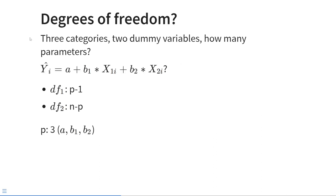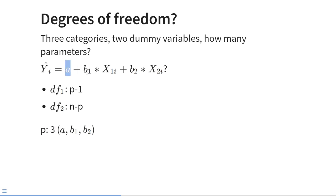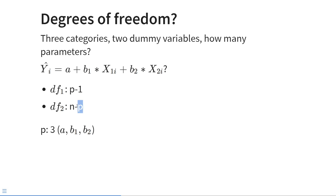How many degrees of freedom does such a regression model have? When performing an F-test for overall model fit, we have two sources of degrees of freedom. The degrees of freedom for the regression model equals the number of parameters minus 1. Here we have three parameters — the intercept a, slope b₁, and slope b₂ — so that's 3 minus 1 equals 2. The degrees of freedom for the residuals equals the number of participants minus the number of parameters — for example, 100 minus 3 equals 97.